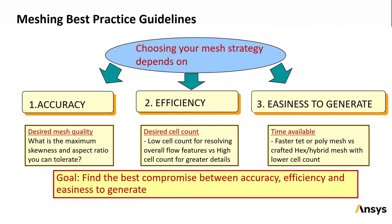Mesh quality plays an important role in the success of a CFD simulation. When deciding on a meshing strategy, three factors must be considered: the accuracy required of the simulation, the computational efficiency or speed of the calculation, and the amount of time and effort needed to create a particular kind of mesh. Questions that need to be answered include what is the maximum skewness and aspect ratio that will allow you to achieve sufficiently accurate results? Is it sufficient just to resolve the overall flow features, meaning a relatively low cell count is required? Or is it necessary to resolve more details of the flow, which would require more cells? And how much time do you have to spend working on the mesh? These questions have a different answer for every simulation, so the goal is always to find the best compromise between all of the factors.